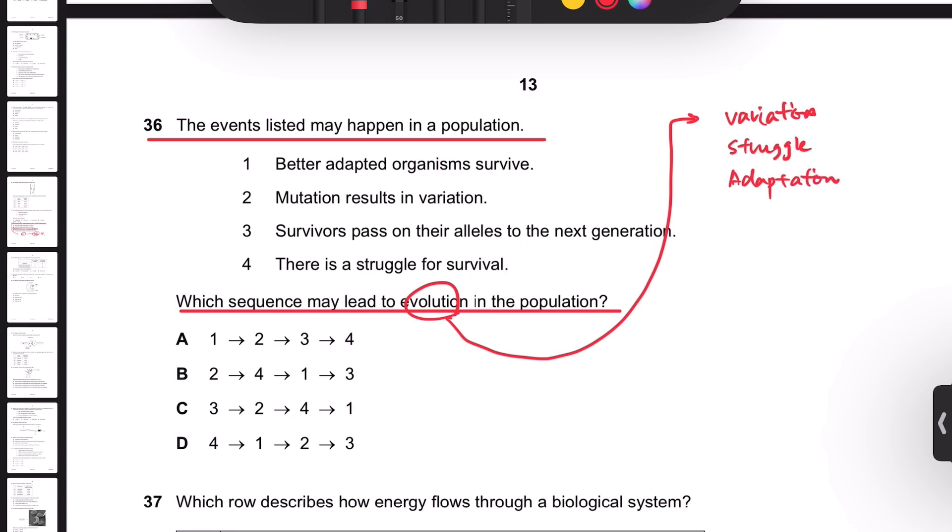Better adapted than the others within a struggle. So when there's a population and some of them are different from the others, sometimes a struggle comes like flooding or earthquake or famine. Within the struggle, when the struggle comes...